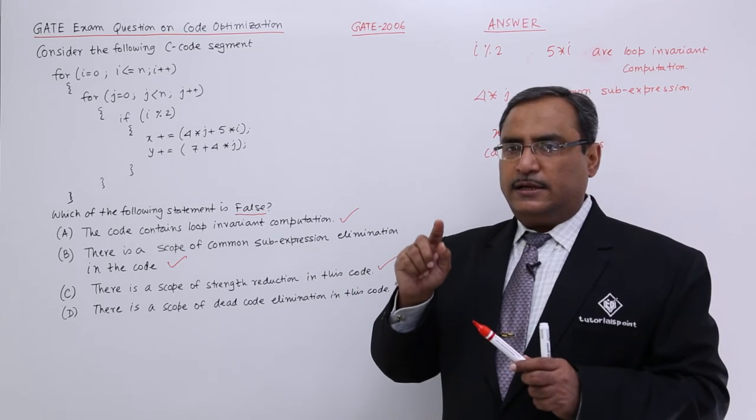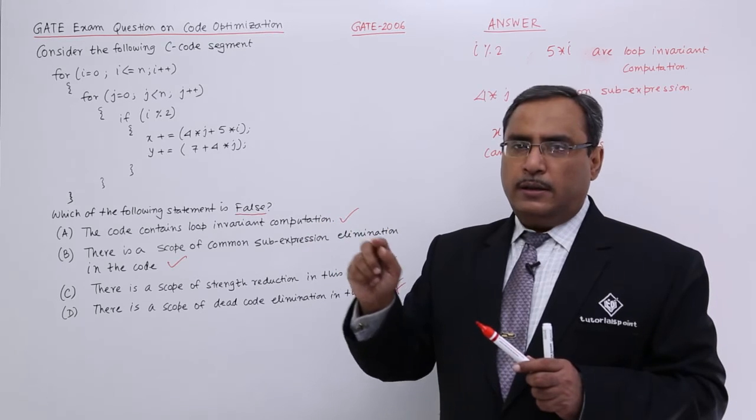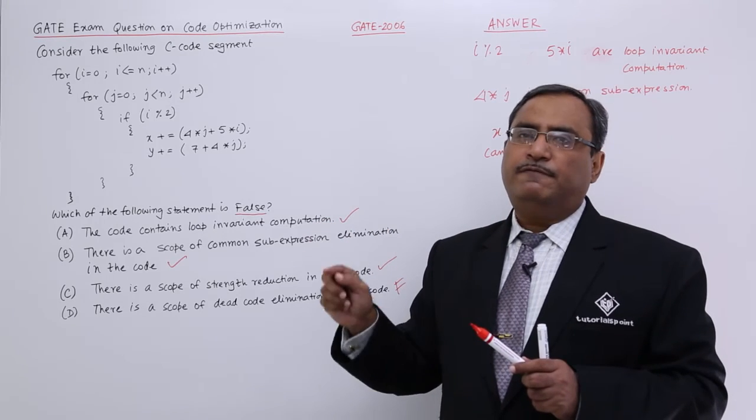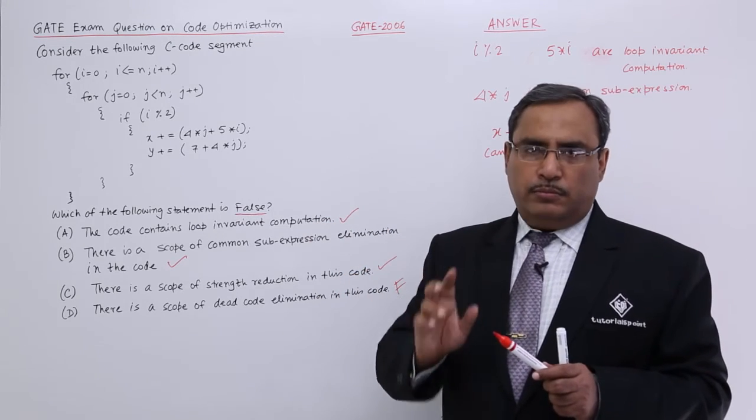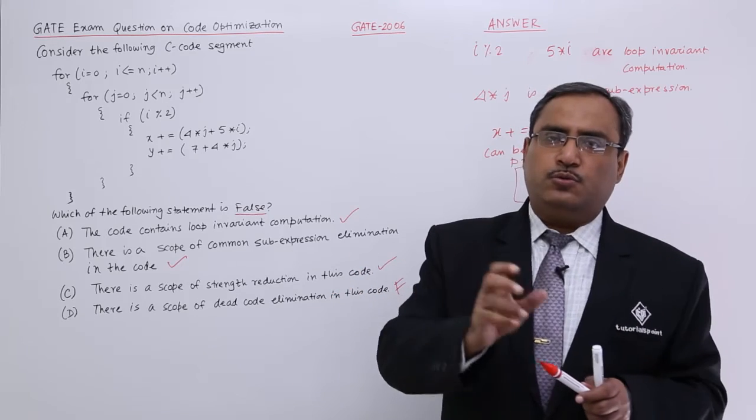See what are the loop invariant computations, what are the common sub expressions which can be eliminated, and if there is such case that a variable is getting incremented by 1 but it is getting multiplied by 5 to add it to use that one as a sub expression to another expression, whether there is some scope of any strength reduction.